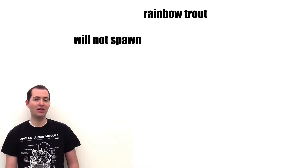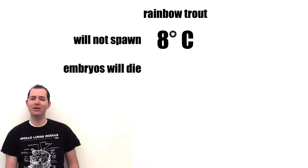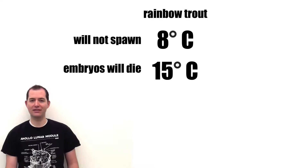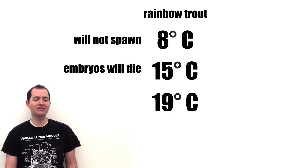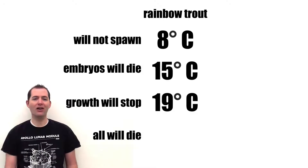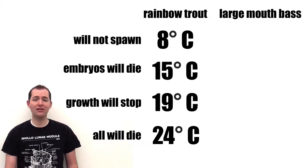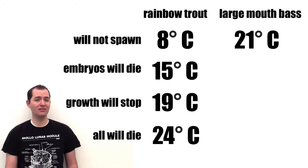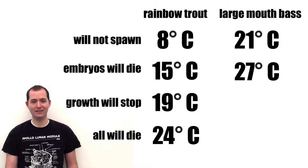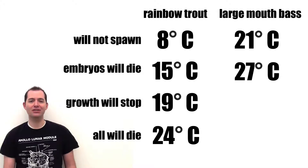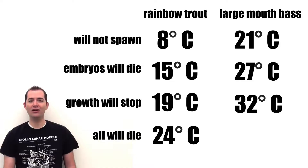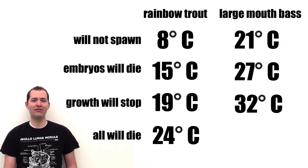The temperature of water influences different stages of animal life in different ways. For example, rainbow trout will not spawn at temperatures above 8 degrees Celsius and embryos will die at temperatures above 15 degrees Celsius. At temperatures above 19 degrees Celsius the growth of rainbow trout will stop, and all rainbow trout will die at temperatures above 24 degrees Celsius. As a comparison, largemouth bass will not spawn at temperatures above 21 degrees Celsius and embryos will die at temperatures above 27 degrees Celsius. Growth of largemouth bass will stop at temperatures above 32 degrees Celsius, and all largemouth bass will die at temperatures above 34 degrees Celsius.